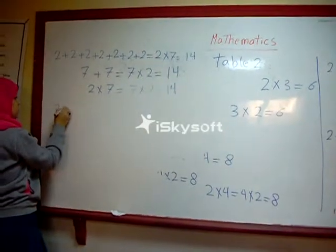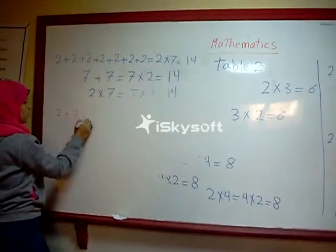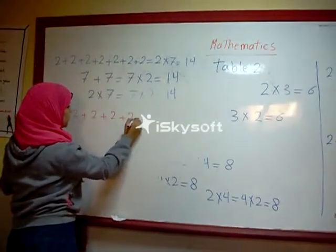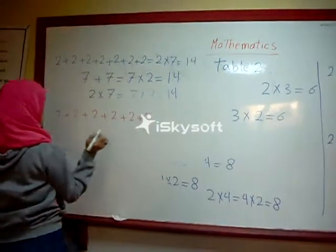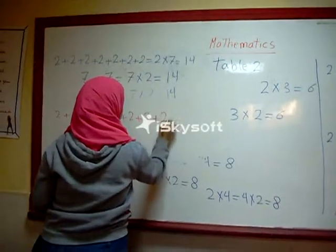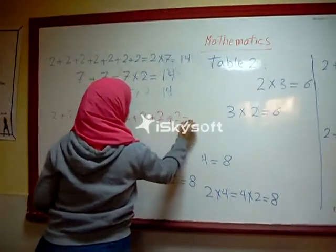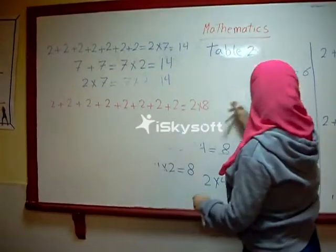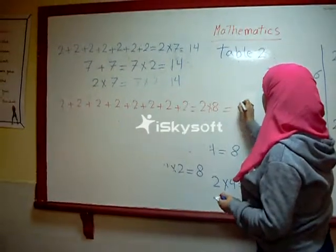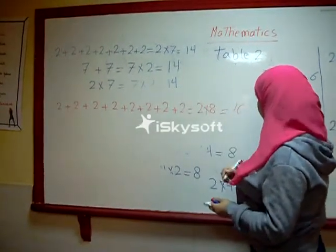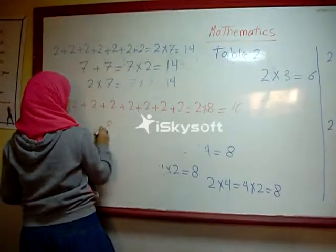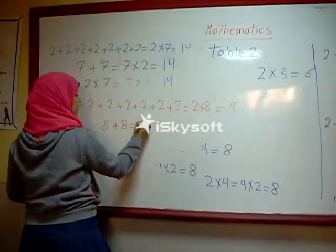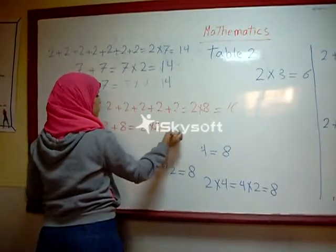Two plus two plus two plus two plus two plus two plus two plus two equals two times eight equals sixteen. Eight plus eight equals eight times two equals sixteen.